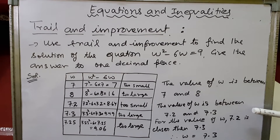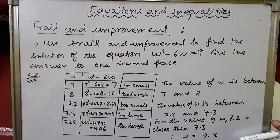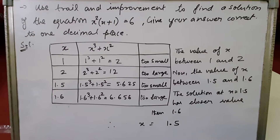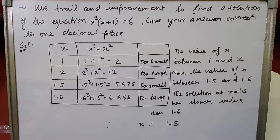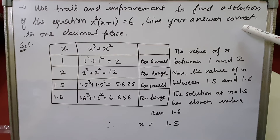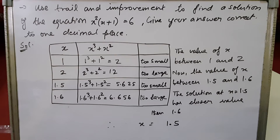We write the comment: the value of w is between 7.2 and 7.3, and 7.2 is closer than 7.3 to the required result. So the solution is w = 7.2. This is the trial and improvement method — please note down this example. Now let's see another sum: use the trials and improvement method to find a solution of x²(x + 1) = 6, giving the answer correct to one decimal place.